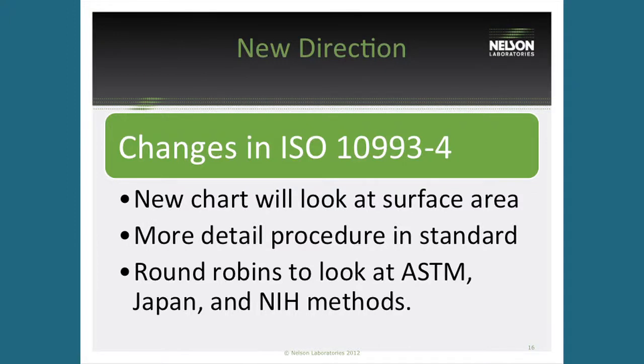So what changes are we looking at in ISO 10993-4? The first change — and probably the most useful for you — is that we're writing a new chart to help evaluate what tests to run for your devices. I'm actually on the subcommittee for this chart. This chart will be based on surface area. The first decision tree will be: does your device have a large or small surface area? The discussion right now is what determines a large versus small surface area, and once we determine that criteria we'll have better discussions on what testing has to be run.